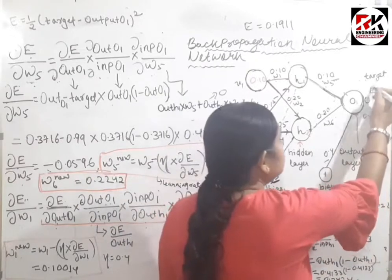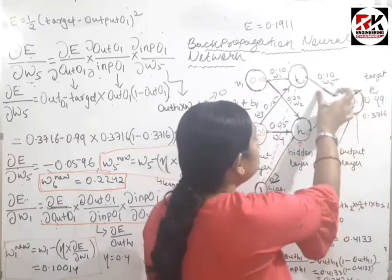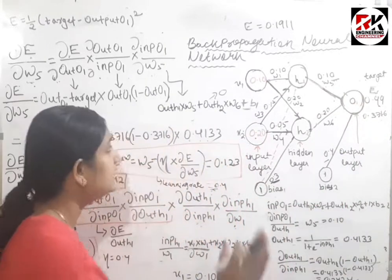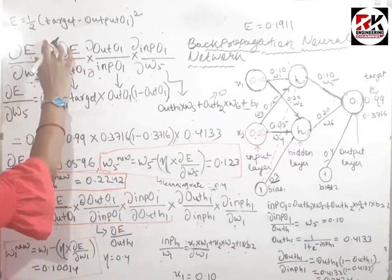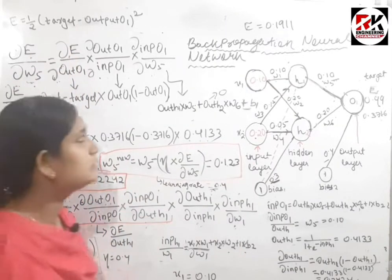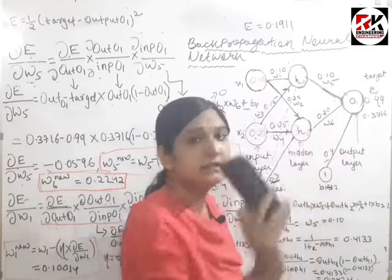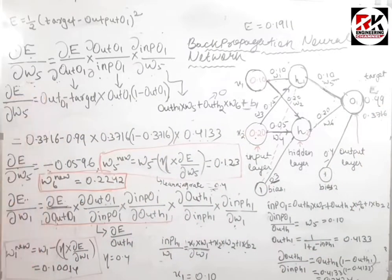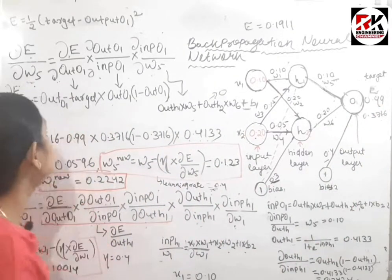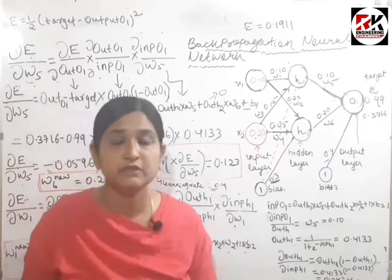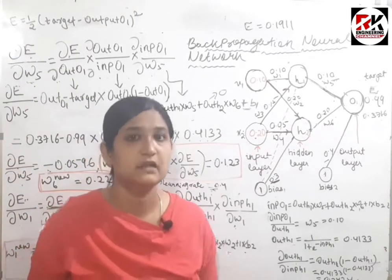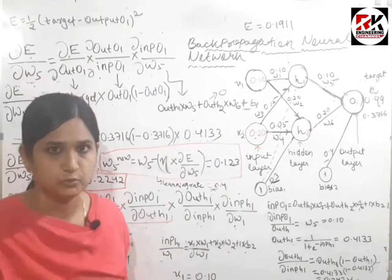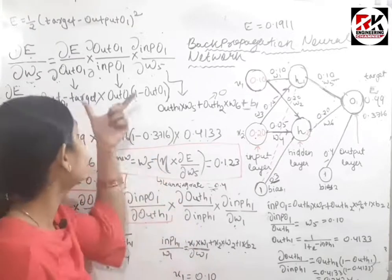We have to do a partial derivative of the error with respect to w5. To change the w5 value, we need the partial derivative of error with respect to w5. We cannot calculate this directly — we need to expand this term with the help of the chain rule.